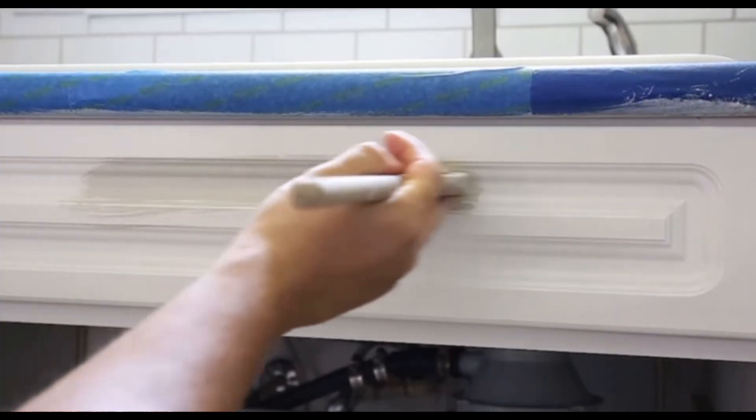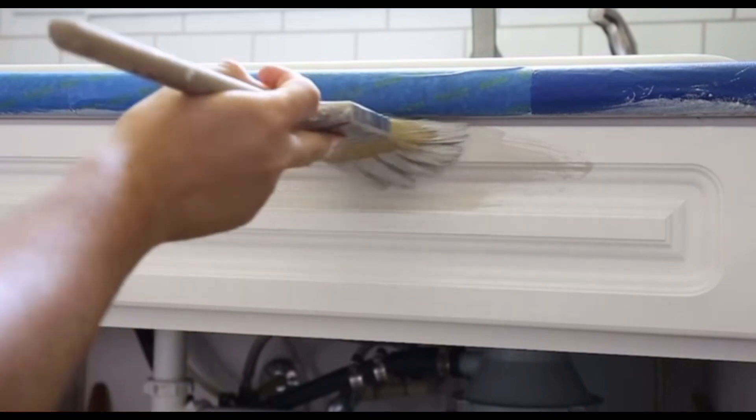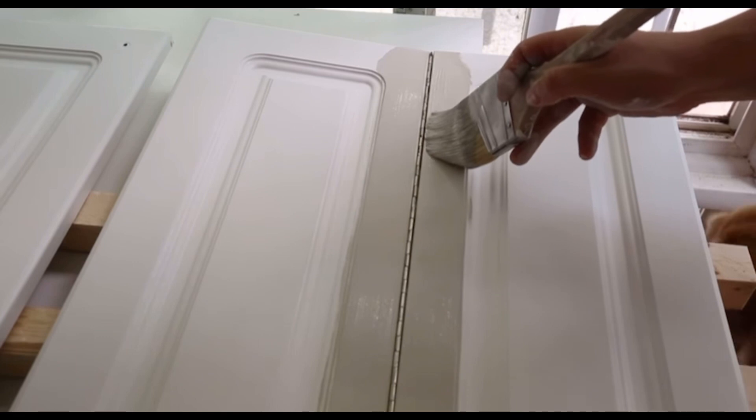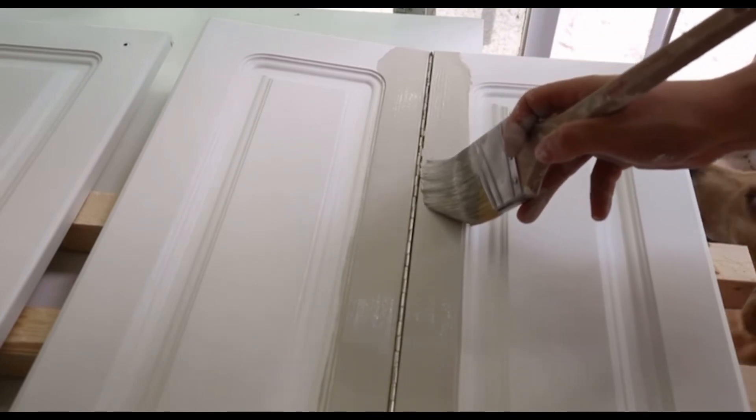Use a paintbrush again to cut in any corners, crevices, or areas that can't be reached with a paint roller. After cutting in, use a roller to apply the paint to the rest of the kitchen cabinets.